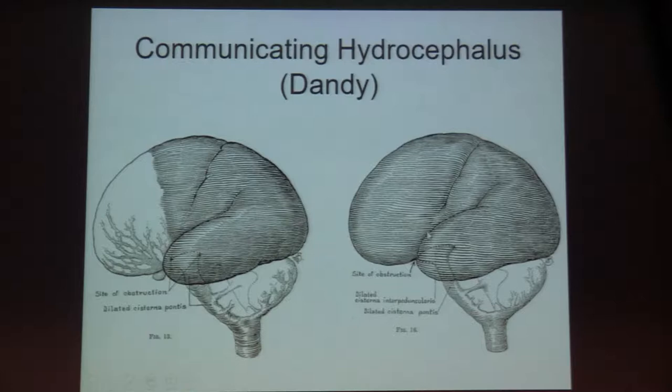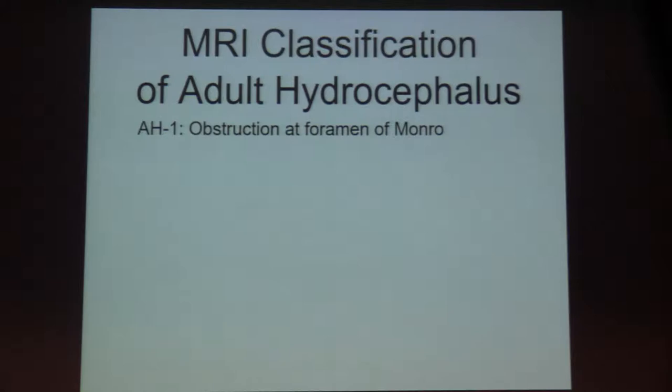It's been known for a long time — this is from Dr. Walter Dandy at Johns Hopkins, starting in 1918 and finishing his career in the 1940s with dye studies in the subarachnoid space — that there are points of obstruction in patients with hydrocephalus.